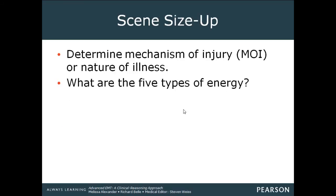You want to determine your mechanism of injury or nature of illness — this refers to the types and amounts of energy a patient was subjected to and what caused harm. Your five types of energy include: kinetic energy (energy of objects in motion), thermal or heat energy, electricity, radiation, and chemical energy.